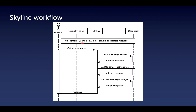Finally, I will show the process of calling a complex API. When accessing the server or related resources, a request will be sent to Skyline. Skyline will call multiple OpenStack APIs such as Nova, Cinder, and Glance. As a result, all responses and resources involved will be returned together.